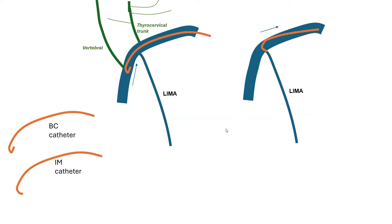Lately, I've been doing most of my graft angiography cases from a left radial axis. The first artery I engage is the LIMA, so I go in with a BC catheter that is sharply angled. I go into the proximal subclavian, then I hook the LIMA on the way back, which elongates the catheter and makes it hook the LIMA. Usually I do a slight clockwise torque from a left radial, which is usually successful, whereas from a groin, we usually need a slight counter-clockwise torque.